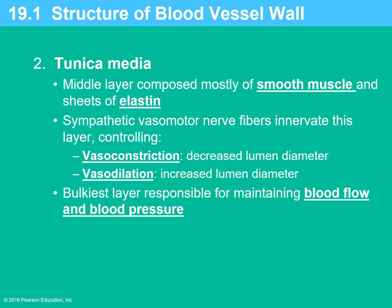The tunica media is the middle layer, mostly smooth muscle with sheets of elastin. There are sympathetic nerve fibers that innervate this smooth muscle layer, allowing two things to occur: vasoconstriction and vasodilation. Vasoconstriction causes the smooth muscle to constrict, decreasing the interior lumen diameter and therefore decreasing blood flow. Vasodilation increases the diameter, increasing blood flow. This tunica media smooth muscle controls blood vessel diameter and is regulated by the sympathetic nervous system.